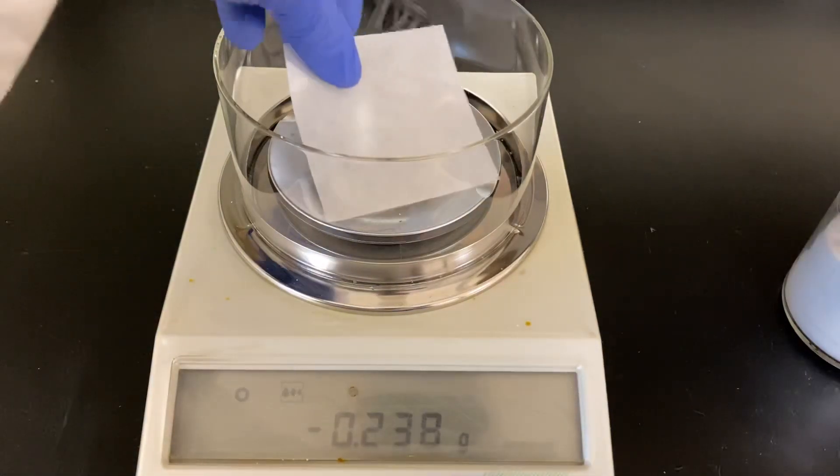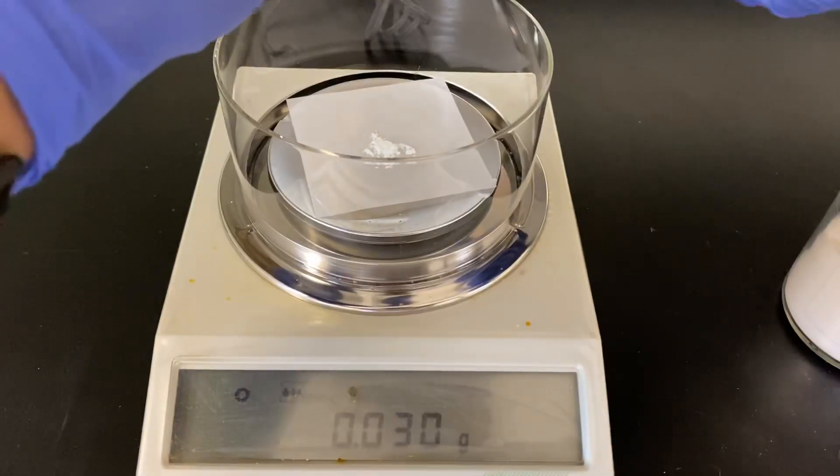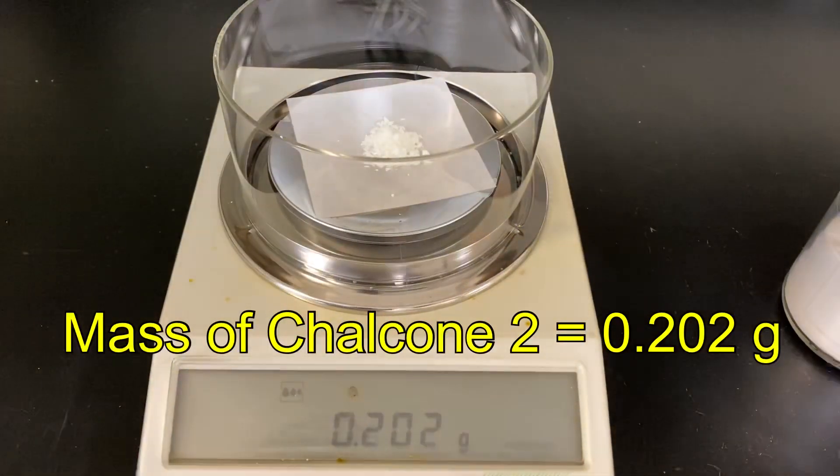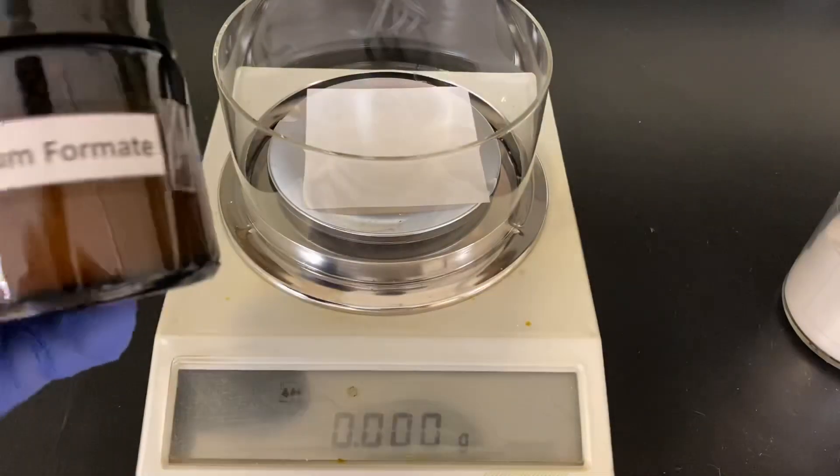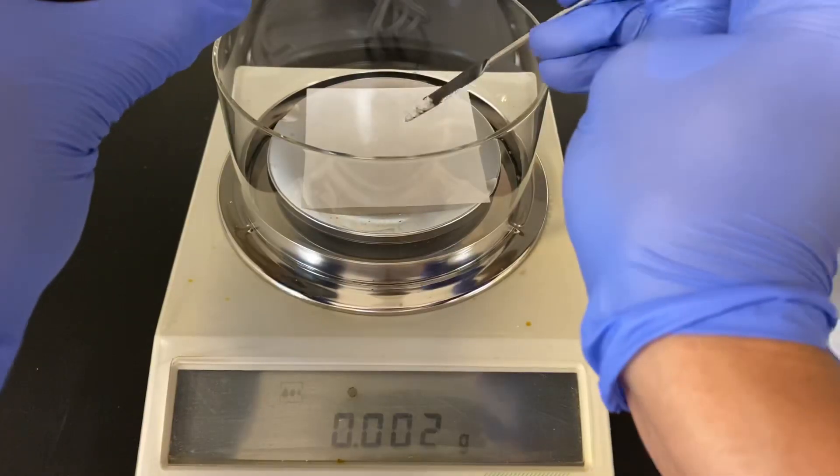For the catalytic reduction of the substituted chalcone 2 experiment, the initial mass of chalcone 2 used was 0.202 grams. The mass of ammonium formate used was 0.378 grams.